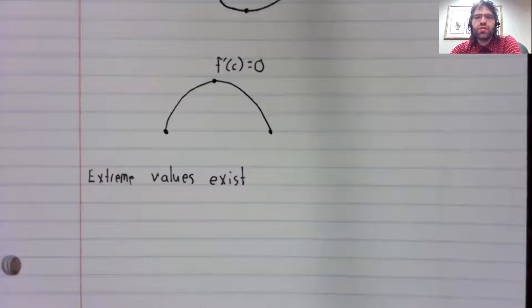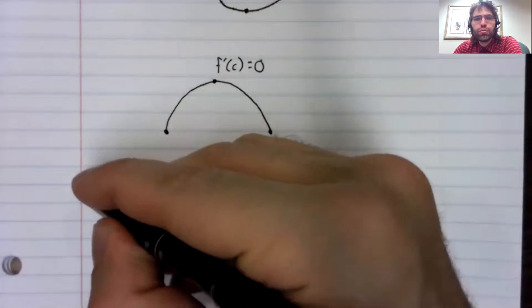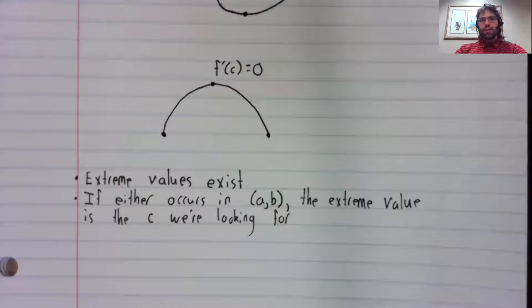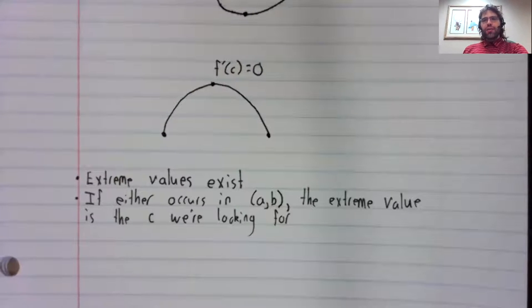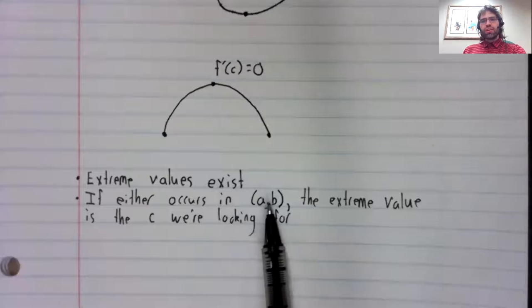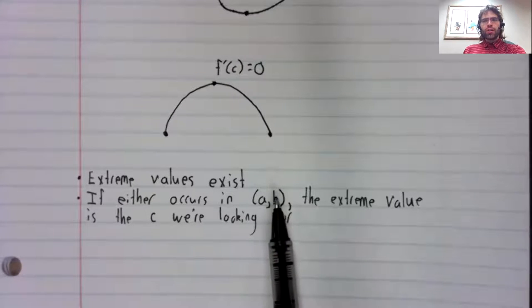A continuous function has extreme values, an absolute max and an absolute min. Now if either of these extreme values occurs in this interval, we're done.